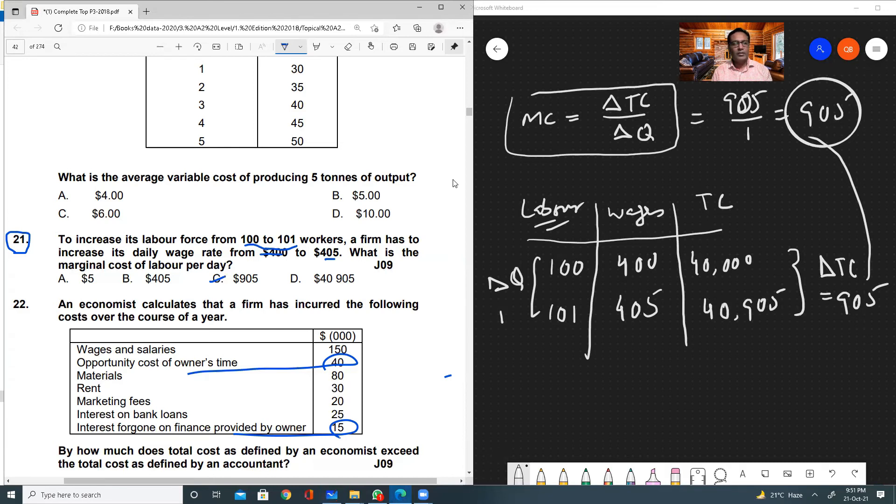In most cases, students read the question and immediately see the difference in wage rate, that is $405 minus $400, and they generally select option A. But option A is not correct. You need to find out total cost first, then you can find out change in total cost and change in quantity.